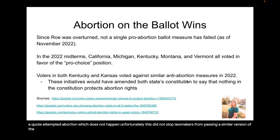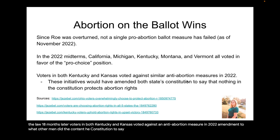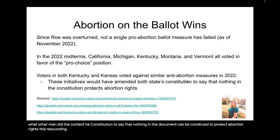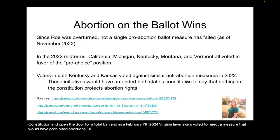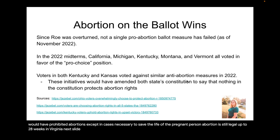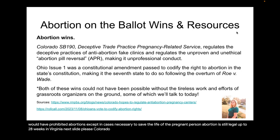In the 2022 midterms, after Roe was overturned, five states all voted for the pro-choice position: California, Michigan, Kentucky, Montana, and Vermont. California, Vermont, and Michigan all voted to codify abortion rights in the state's constitution. Voters in Montana rejected a ballot measure that would have forced medical workers to intercede in the extremely rare case of a baby born after a so-called attempted abortion, which does not happen and perpetuates a false narrative. Unfortunately, this did not stop lawmakers from passing a similar version of the law a few months later.